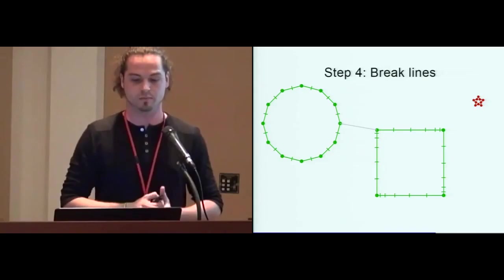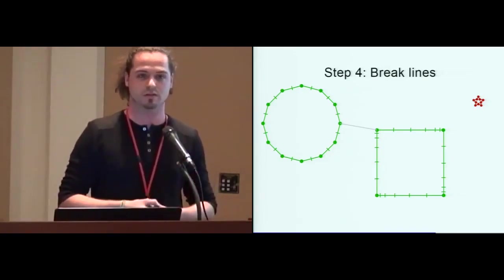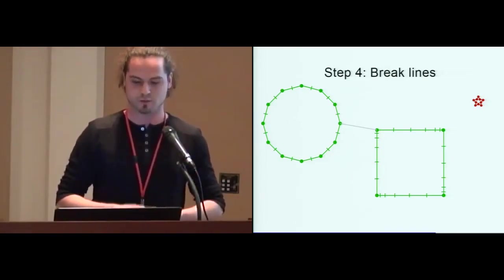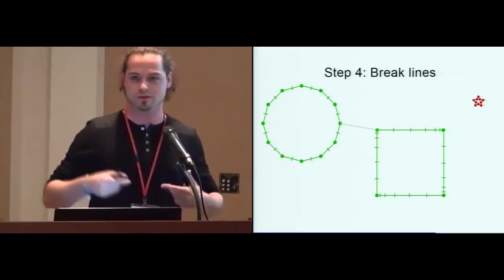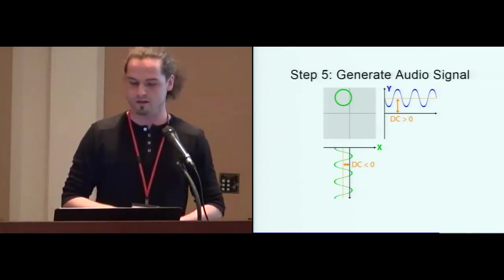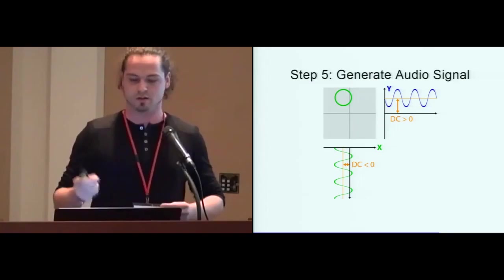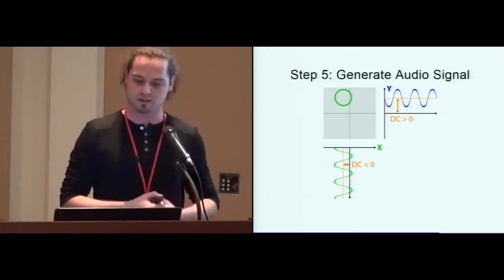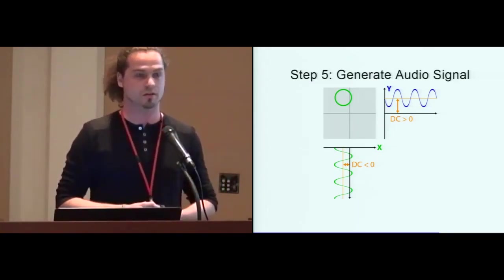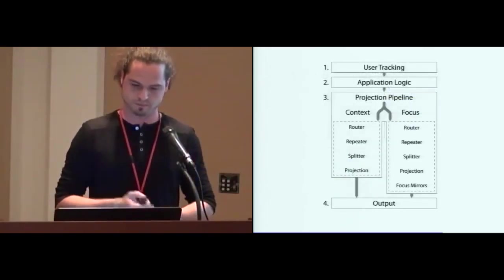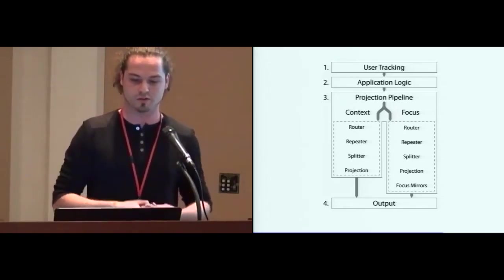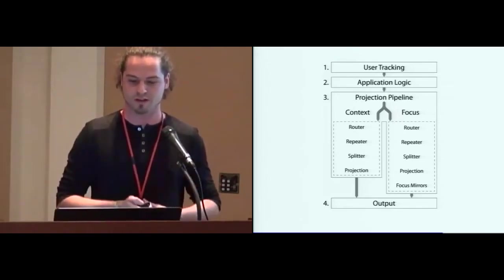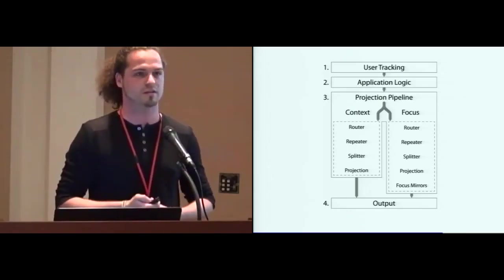Also we needed breaking of lines because the mirror had a nonlinear behavior. Straight lines wouldn't be visible as straight lines on the ground if we wouldn't break down these lines. To send it to the hardware we used a sound card. All the sequences of points were converted to analog signals and played back by the sound card on three channels. This is the pipeline we used: we had user tracking, the application responds to this tracking, it went through the pipeline, and then was played back by the sound card.